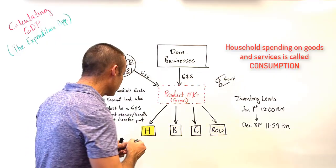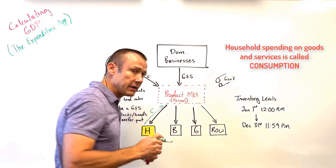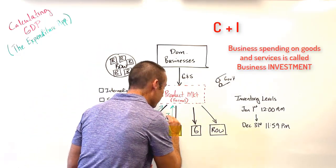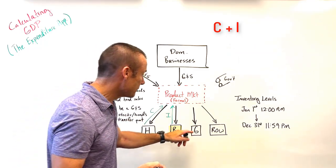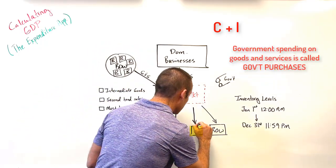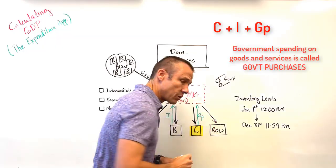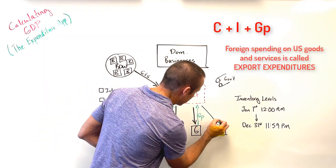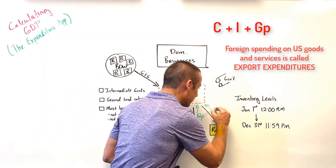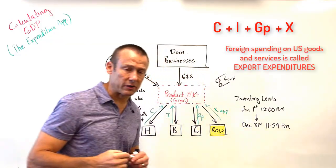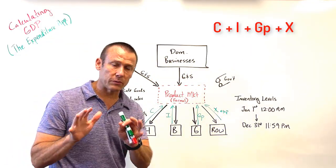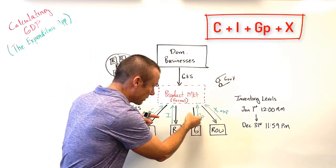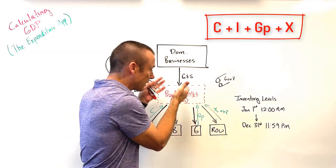There are four entities buying goods and services at the macro level. When households spend money on goods and services we call that consumption. When businesses spend money we call that investment, or investment spending. When government buys goods and services we use the term government purchases. And when the rest of the world buys these goods and services we call these export expenditures.